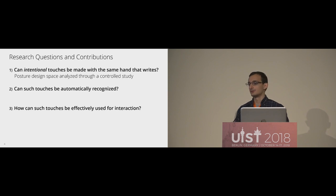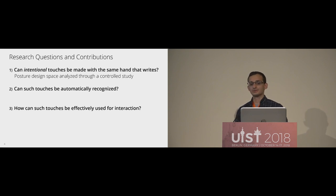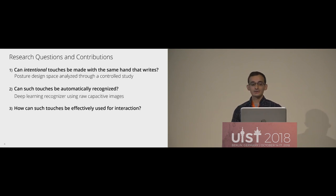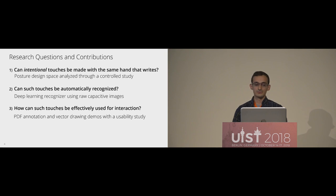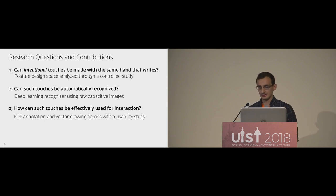The first question we answered by first rigorously defining what we mean by a posture. We came up with a posture design space and analyzed the set of postures through a controlled study. For the second question, we trained a deep learning recognizer on the raw capacitive images gathered from that first study. And finally, for effectiveness, we had two demos — a document annotation demo and a vector illustration demo — which we evaluated with a small usability study.